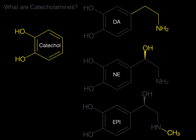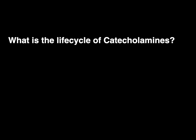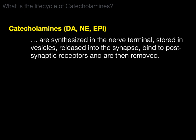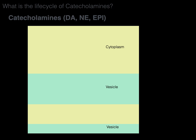So there we've got the catechol backbone with dopamine, norepinephrine, and epinephrine. What is the life cycle of catecholamines? Catecholamines — dopamine, norepinephrine, and epinephrine — are synthesized in the nerve terminal. They're stored in vesicles and then released into the synapse, where they bind to postsynaptic receptors and are then removed. In this diagram, yellow represents where things occur in the cytoplasm and green represents where they occur in a vesicle.